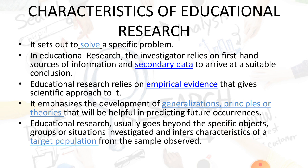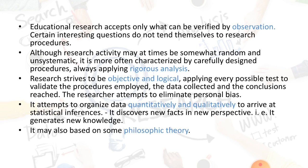This research helps us predict future situations. As a result, schools now specify admission for children aged three and above — that is a result of educational research. Educational research usually goes beyond a specific object or group, investigating the characteristics of a target population from the sample observed — generalizing from a sample to the population from which it was drawn.